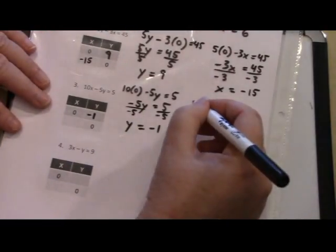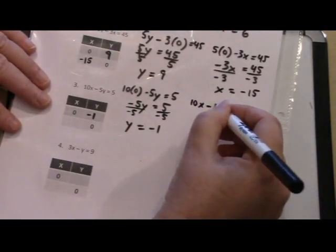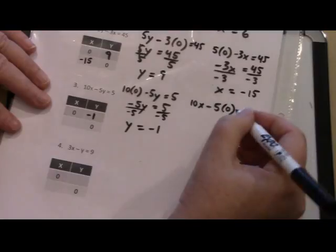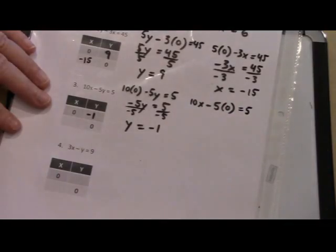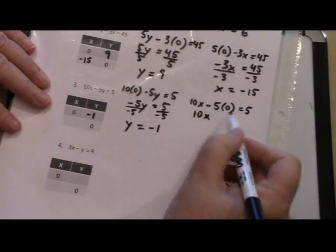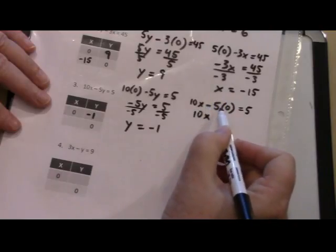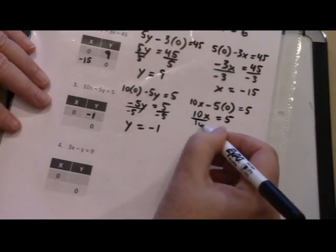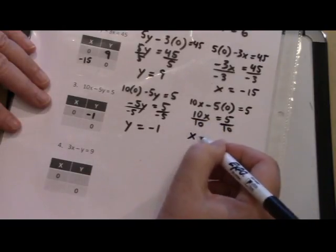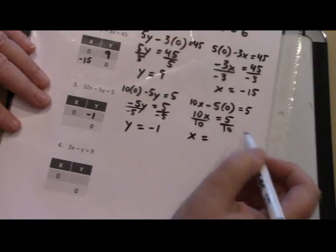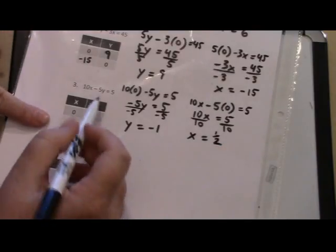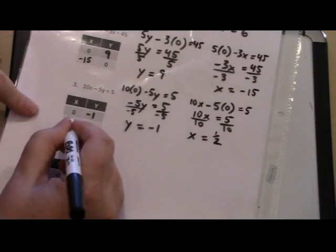Let's get our second coordinate. 10x minus 5 times 0, because now I'm substituting that 0 into the y, equals 5. 10x, and that just goes away, equals 5. Now I'm going to divide by 10. x equals 5 tenths. We can reduce that down to 1 half. So in this case, when y is 0, x is going to be 1 half. And it's okay to have fractions in coordinates.